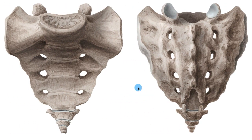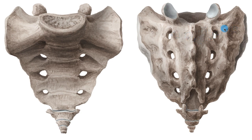Here on the image on the left side you can clearly see the ventral view of the sacrum and also the coccyx. And on the image on the right side you find the dorsal view of the two bones.